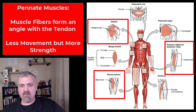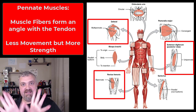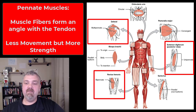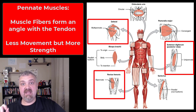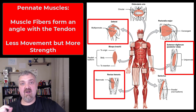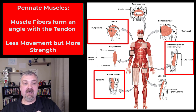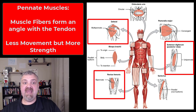Pennate muscles form an angle with the tendon — think of the feather on the end of an arrow. You're not going to get as much range of motion from a pennate muscle as from a parallel muscle. But because of their arrangement, you can cram more muscle fibers — more myofibrils specifically — into a square inch, so they develop more tension. Pennate muscles are going to be really powerful and able to develop the most tension.